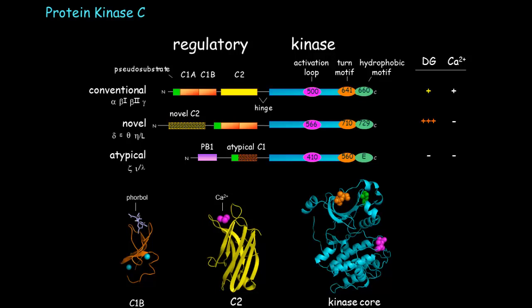The novel protein kinase Cs' C1 domains bind diacylglycerol with two orders of magnitude higher affinity, and thus they only need one second messenger, diacylglycerol, for activation. The atypical protein kinase Cs have a C1 domain that is unable to bind diacylglycerol, and so they are regulated by neither diacylglycerol nor calcium. The ability of novel protein kinase Cs to bind diacylglycerol with this 100-fold higher affinity is because they have a C1B domain with a tryptophan at a key residue. When present as a tryptophan it allows high affinity binding; when present as a tyrosine, binding affinity is much lower.